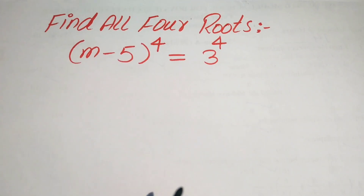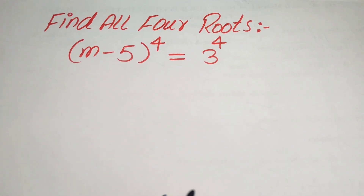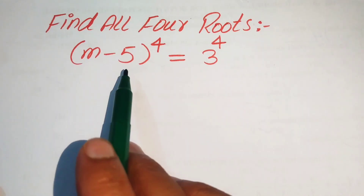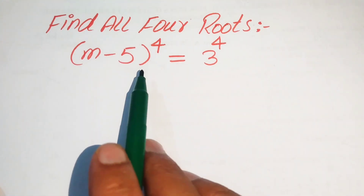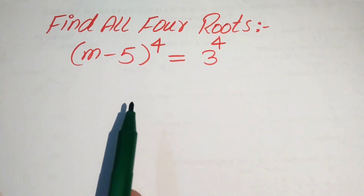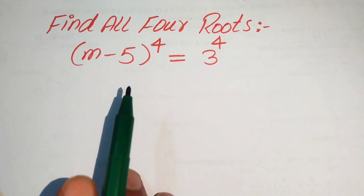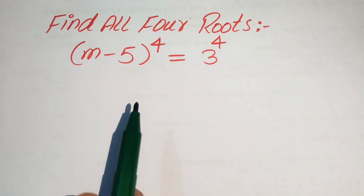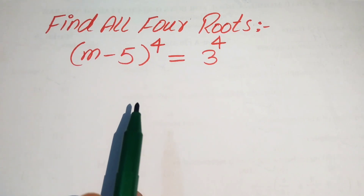Hello everyone, welcome. We will solve this lumped algebra problem: (m minus 5) to the power 4 equals 3 to the power 4, and we need to find all the fourth roots of m.